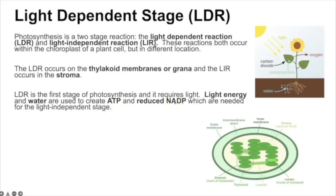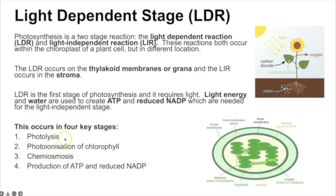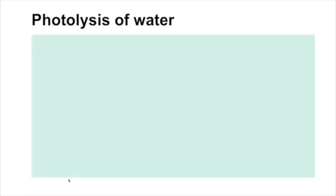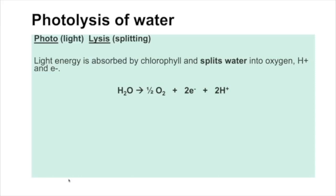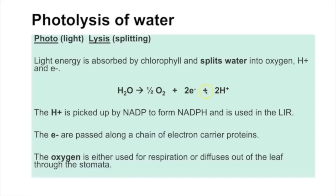There are four key steps: photolysis (sometimes pronounced photolysis), photo-ionization of chlorophyll, chemiosmosis, and production of ATP and reduced NADP. Starting with photolysis — 'photo' refers to light, 'lysis' means splitting — so photolysis of water means light energy is absorbed and splits water into oxygen, electrons, and protons (hydrogen ions).